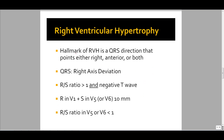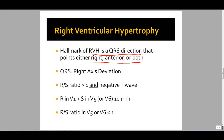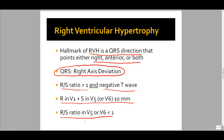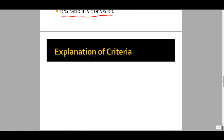The hallmark of right ventricular hypertrophy is a QRS direction that points right, anterior, or both. The QRS axis will be right-axis deviated due to the increasing mass of the right ventricle. The RS ratio — R spike divided by S spike — is greater than 1 with a negative T wave in V1. The R wave in V1 plus the S in V5 or V6 is equal to or greater than 10 mm. And the RS ratio in V5 or V6 is usually less than 1.